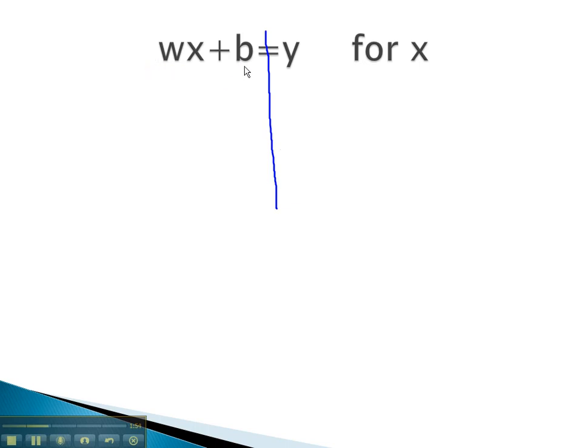If the other variables were numbers, we would add and subtract first. So to get rid of a plus b, we will subtract b from both sides. Notice, b minus b subtracts out, and we're just left with wx equals. We don't have like terms, so we just leave it as y minus b.